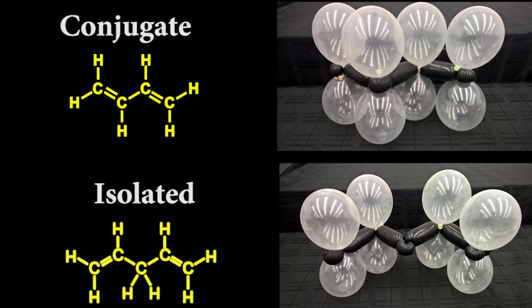Okay, in this video we're going to make a model that can be used both to show conjugate and isolated double bonds along a carbon chain.